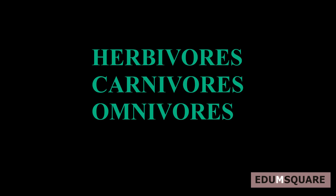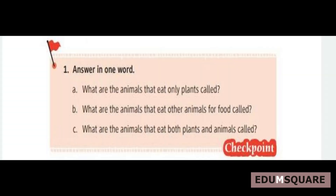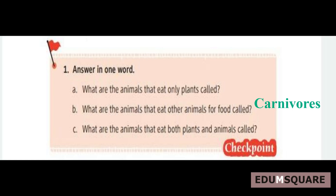Now I will ask some questions. Listen carefully. First question: What are the animals that eat only plants called? They are called plant-eating animals or herbivores. Second question: What are the animals that eat other animals for food called? They are called flesh-eating animals or carnivores. Third question: What are the animals that eat both plants and animals called? The answer is omnivores.